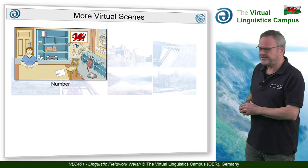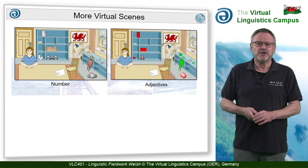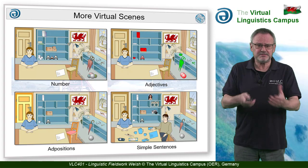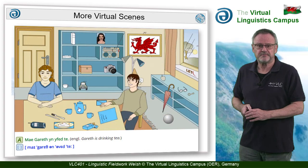Further scenes deal with number, with adjectives — for example, the colours — with locative relationships and the organisation of appositional phrases, and even with sentences that are acted out by a second native speaker.